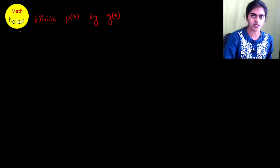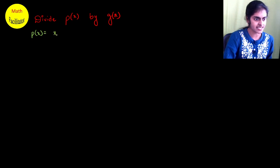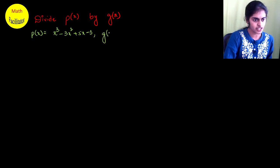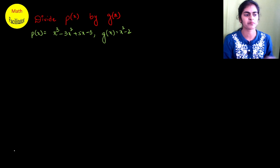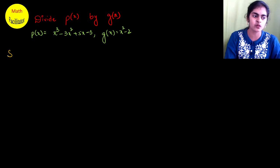The division algorithm of polynomials is usually an essay question. If they give you a very small division they will ask for a short answer. Whether it is an essay question or a short answer, the process is the same. So let's start — divide the polynomial P(x) by G(x). P(x) is given as x³ - 3x² + 5x - 3 and G(x) is given as x² - 2.